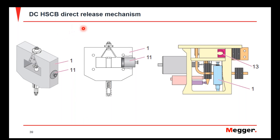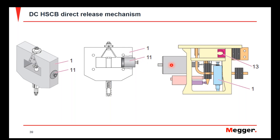The direct release mechanism is the component that helps operate the overcurrent or trip function for this style of breaker. It is an electromagnetic component, and the main current-carrying conductor goes through the middle of this device. When it senses an overcurrent condition, the magnet moves upward and hits a mechanical fork that forces the breaker open. This happens very quickly — as we saw on the curve — and even though the closing coil was holding the breaker shut, the trip mechanism overrides it and forces it open.